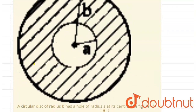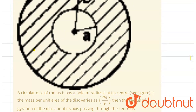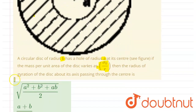Hello everyone. In this question you can see a circular disk of radius b has a hole of radius a at its center. The mass per unit area of the disk varies as sigma₀ divided by r. We need to find the radius of gyration of the disk about its axis passing through its center.